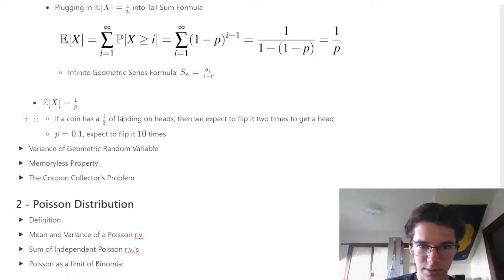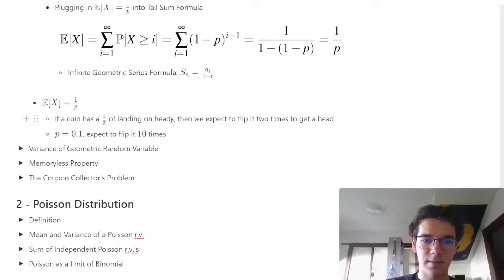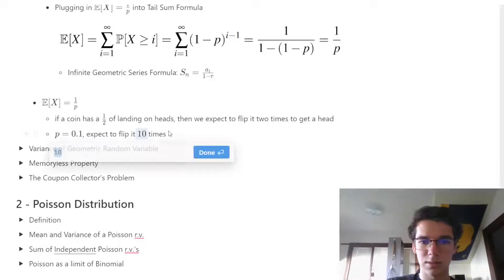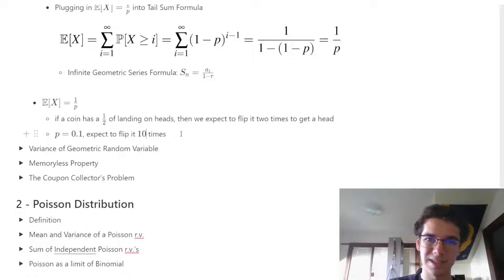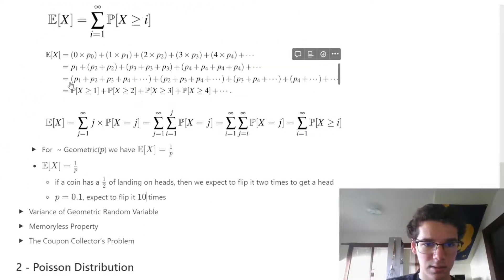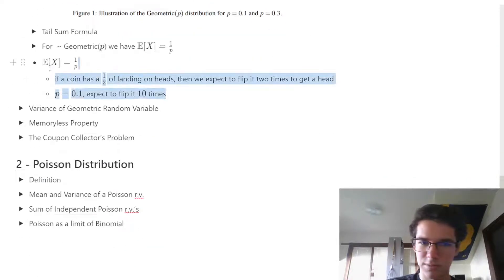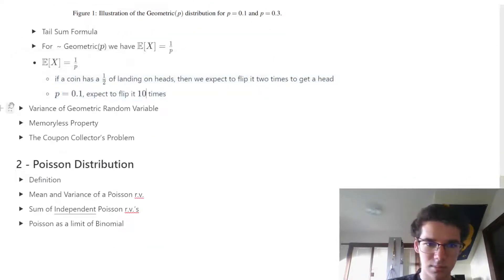If a coin has a 1/2 chance of landing on heads, then we expect to flip it two times to get a head. If a coin has a 0.1 chance of landing on heads, then we expect it to take 10 times before we actually land on heads.